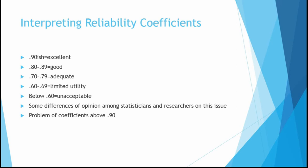One more important point the book doesn't cover: there's a problem if coefficients are too far above 0.90. If all items are correlated at the 0.99 level, we may not need 10 different items — they might all be measuring the exact same aspect of the construct. Ideally, items should have strong but not perfect intercorrelations. If they're perfectly correlated, they're probably all asking the same thing in slightly different ways, which isn't helpful and will frustrate test takers.